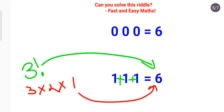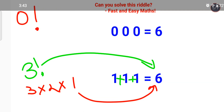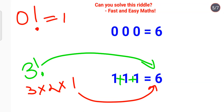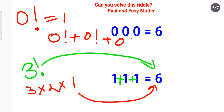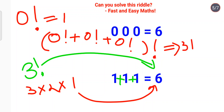For triple 0: always remember that 0 factorial equals 1 — I have a separate video on why, and I'll put a link in the description. So we do 0! plus 0! plus 0!, which equals 1 plus 1 plus 1 equals 3. Then we apply a factorial sign, giving 3 factorial, whose answer is 6.